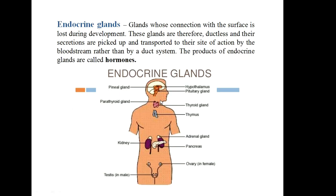The pineal gland, the hypothalamus, and the pituitary gland — the master gland — are located in the head region. The thyroid and parathyroid are present in the neck region, and just below them is the thymus gland. The adrenal gland is located just above the kidneys, so they are known as the suprarenal glands. The pancreas is a mixed gland consisting of both exocrine and endocrine tissues. Finally, the gonads — the testes in the case of males and ovaries in the case of females — are also considered endocrine glands.